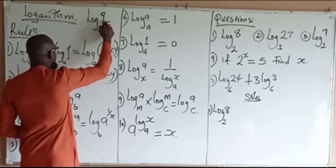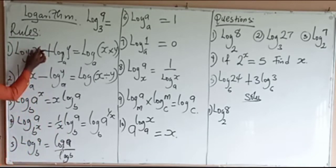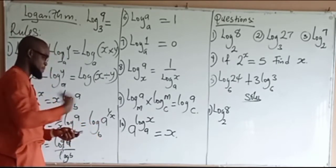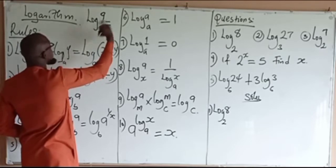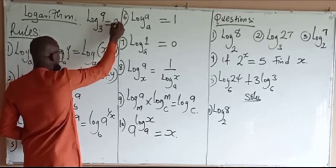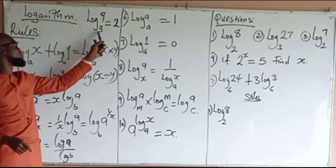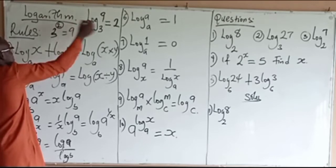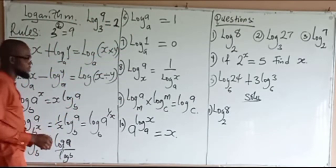If I ask you, what is log 9 to base 3? This 9 is called the logarithm and the 3 is called the base. So what power do I raise this base to in order to get 9? If I raise 3 to the power of 2, I get 9. So the power to which this base must be raised to get 9 is 2. Therefore, log 9 to base 3 is equal to 2. Because 3 to the power 2 equals 9. That is the definition.